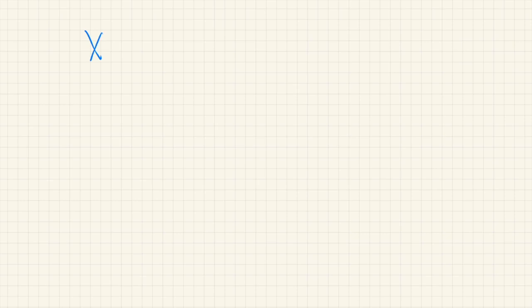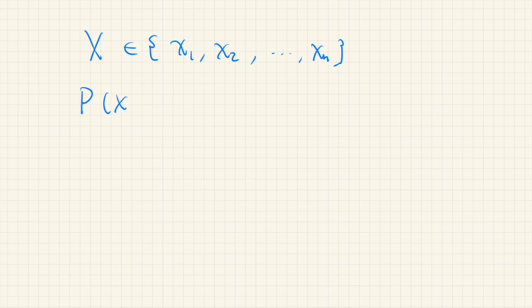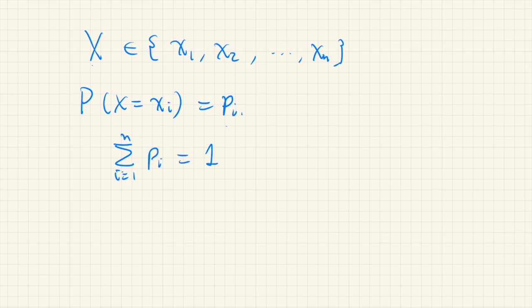In this video we study the principle of maximum entropy and see that the probability distribution that maximizes its entropy is a uniform distribution. First, consider a random variable that takes a value from some n values: x1, x2, and so on up to xn. The probability that the random variable x takes the value xi is given by pi. This is a probability distribution so it must be normalized: the sum from i=1 to n of pi should equal 1.